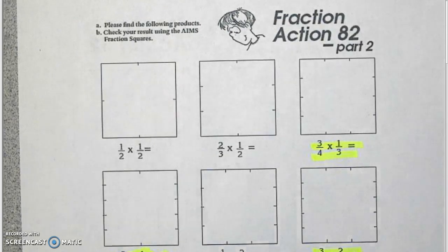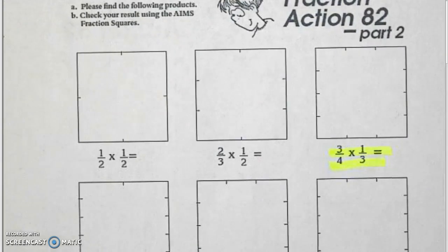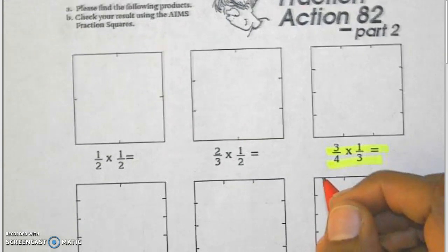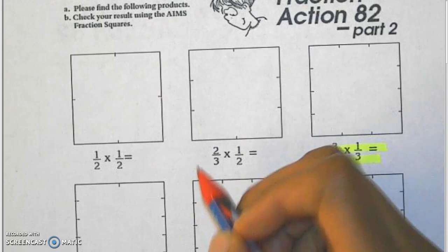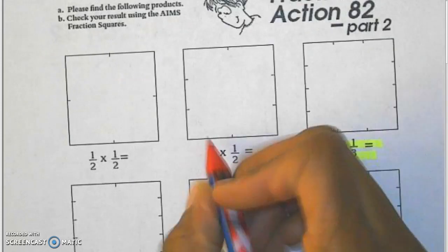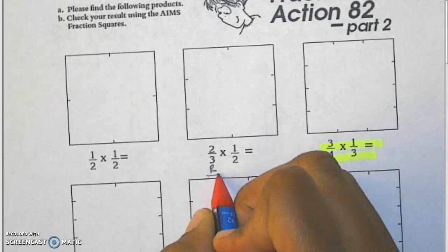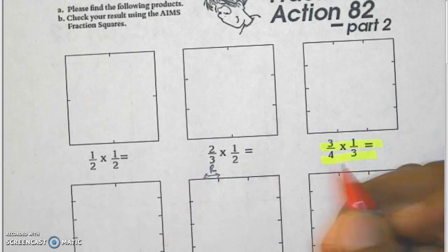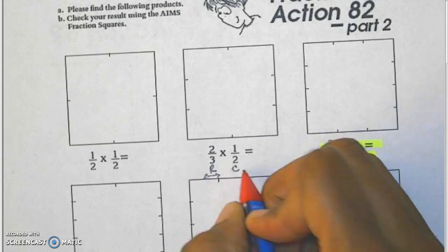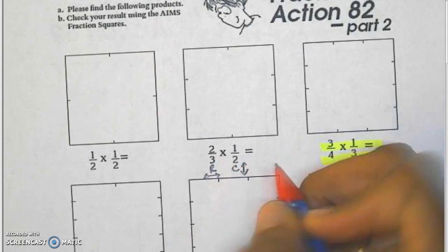We're going to look at the first problem just to get a start. Two-thirds times one-half. When I do two-thirds times one-half remember the first fraction is always going to be my rows which go left to right and my second fraction is going to be my columns which go up and down.